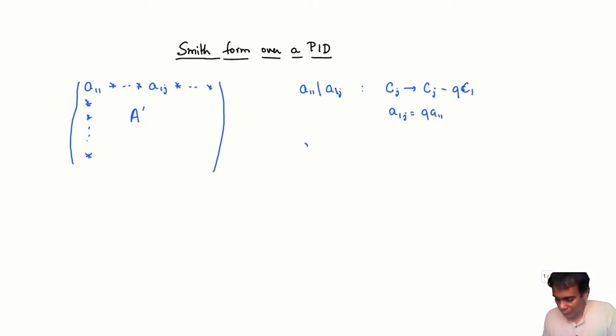But if a_11 does not divide a_1j, then what we did was we used the Euclidean algorithm. So then what we know is that a_1j equals q a_11 plus r, where d of r is strictly less than d of a_11. And then what we did was we did c_j goes to c_j minus q c_1, and then we got r in this position, and then we interchanged c_j and c_1.